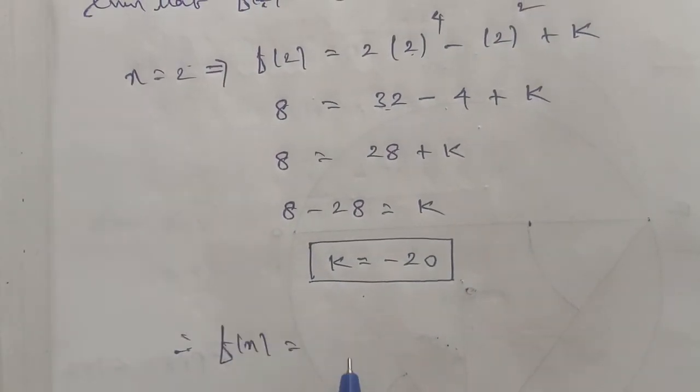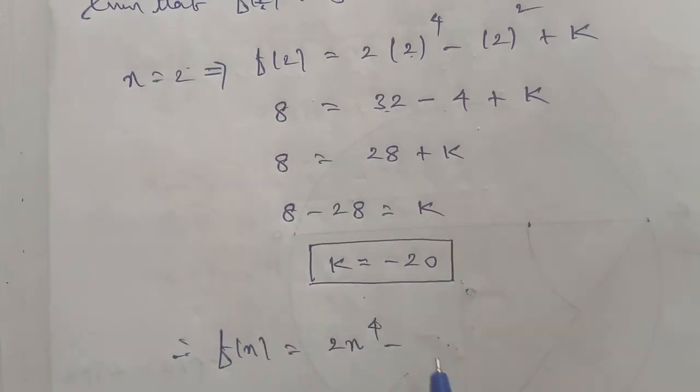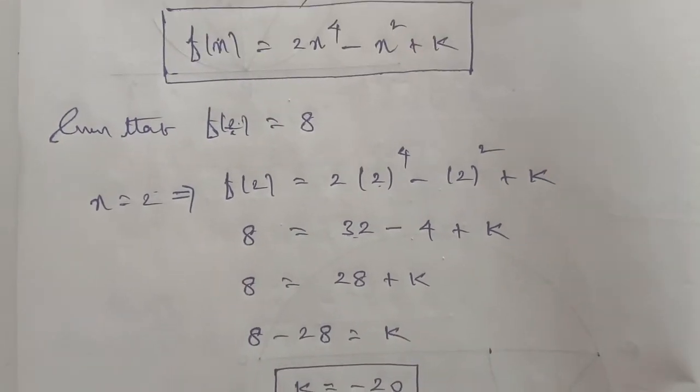Therefore, f(x) = 2x⁴ - x² - 20. This is the final answer.